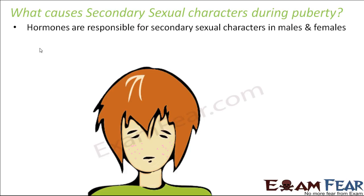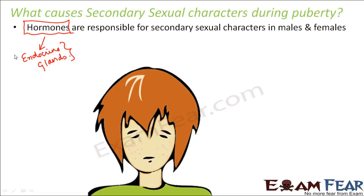Hormones are responsible for secondary sexual characters in males and females. Hormones are substances which are released by the endocrine glands. Endocrine glands do not have ducts, so they directly secrete their substances into the bloodstream. Hormones are chemical substances released by endocrine glands, and these substances can bring about a lot of changes in the body. There are many different types of hormones released by different endocrine glands.